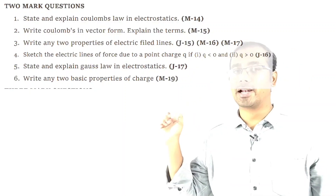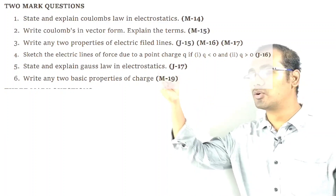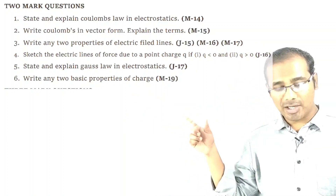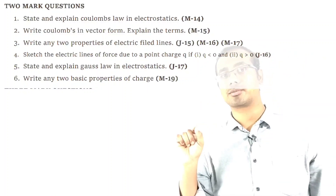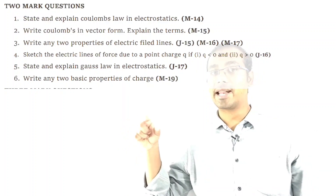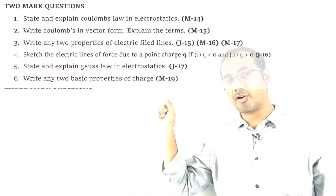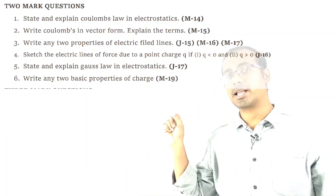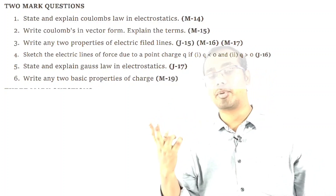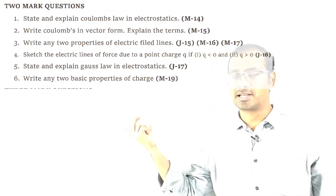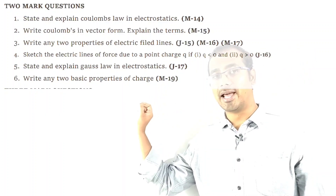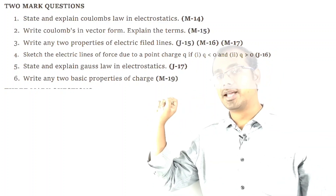Now 2 marks important questions. First: state and explain Coulomb's law in electrostatics — state the law and write the formula. Second important question: write Coulomb's law in vector form and explain each term.